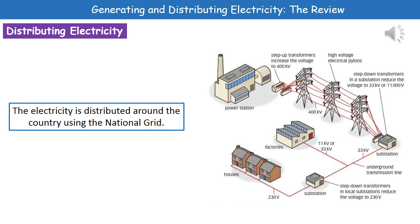The electricity is then transmitted through high-voltage electrical pylons, which you've seen all over the country. Once it's gone through those, it gets to a substation where it goes into a step-down transformer. The voltage is then reduced to either 33,000 volts or 11,000 volts, depending on where it's actually going.